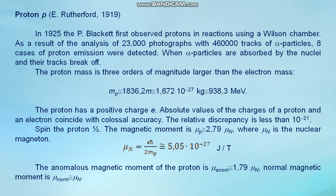The proton mass is three orders of magnitude larger than the electron mass. The proton has a positive charge e. Absolute values of the charges of the proton and electron coincide with colossal accuracy. The relative discrepancy is less than 10⁻²¹. The spin of proton is one half. The magnetic moment is equal to approximately 2.79 multiplied μₙ, where μₙ is the nuclear magneton. The anomalous magnetic moment of the proton is equal to 1.79 μₙ.